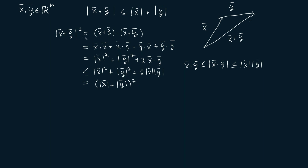And now since both of the terms we're squaring are non-negative, we can just take the square root of both sides to get that the magnitude of x plus y is less than or equal to the magnitude of x plus the magnitude of y. And this is exactly the statement we sought to prove.